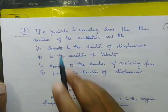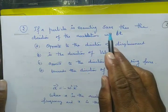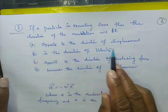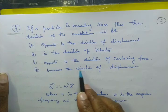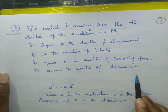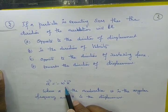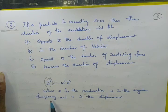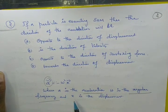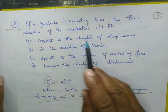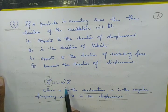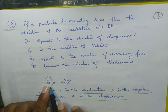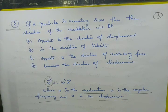A particle is executing SHM. The direction of the acceleration will be: opposed to the direction of displacement, in the direction of velocity, opposed to the direction of restoring forces, or towards the direction of displacement? The acceleration vector A equals minus omega squared into x vector, where A is acceleration, omega is angular frequency, and x is displacement.